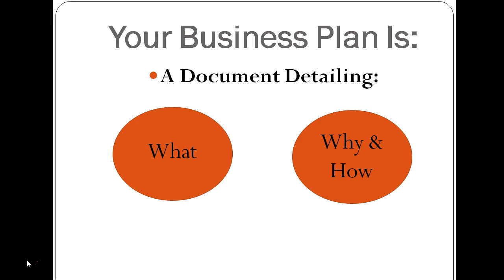The 'what' is the information and knowledge you've gained from researching your market. The 'why' comes after you've looked at your market and decided what you're going to do — this is sometimes called your USP, because your decision to take certain actions is what actually gives you your unique selling proposition. Then the final part is the 'how' you plan to do it.